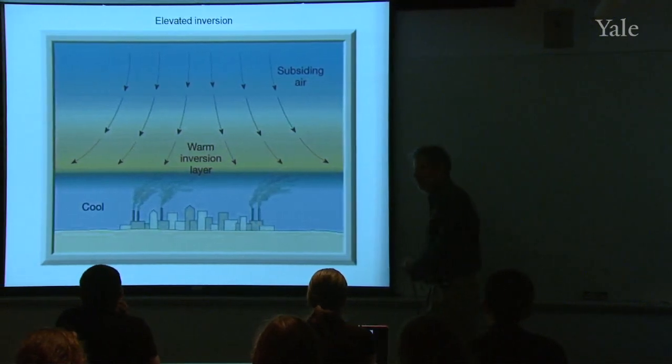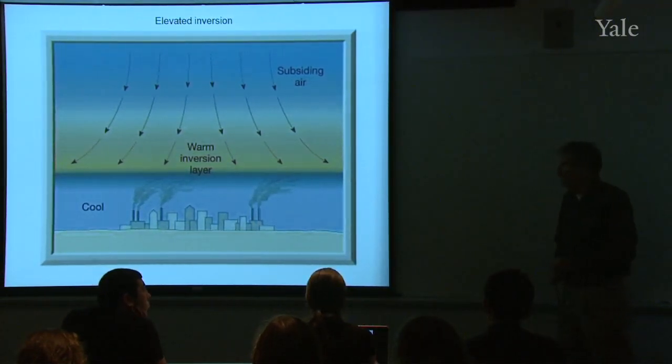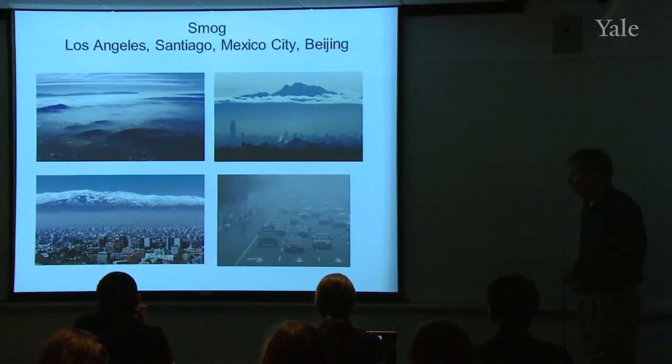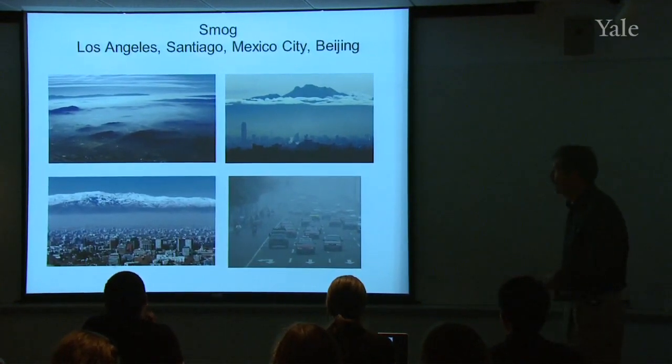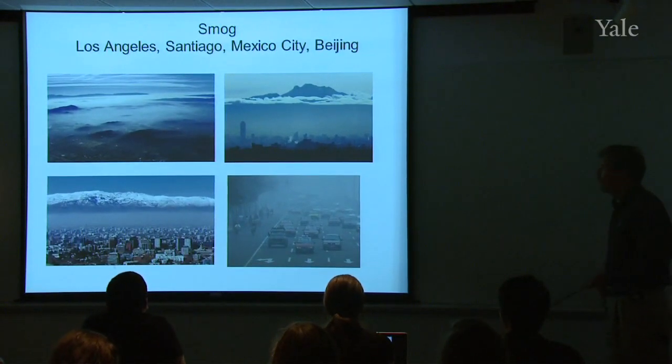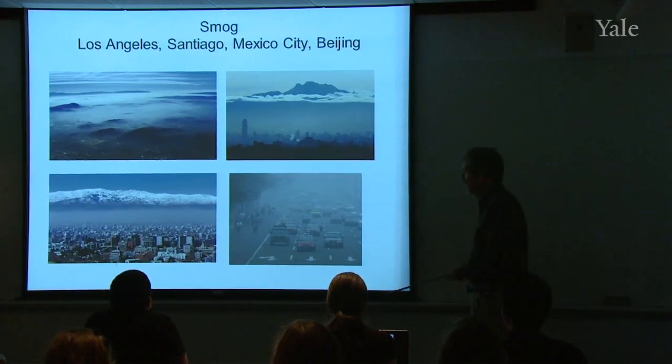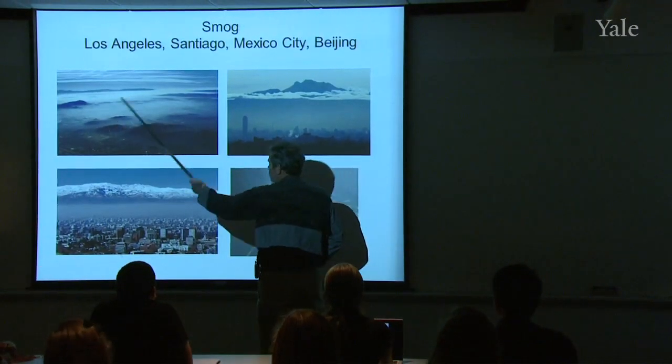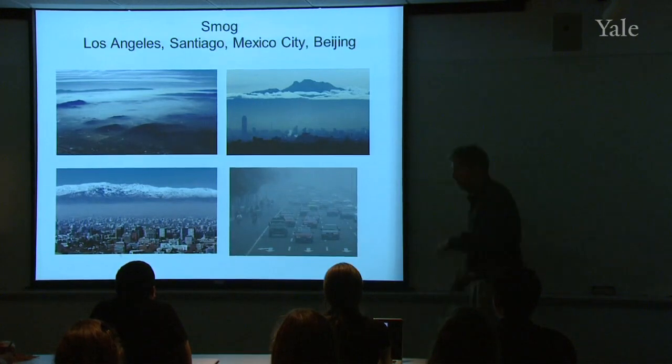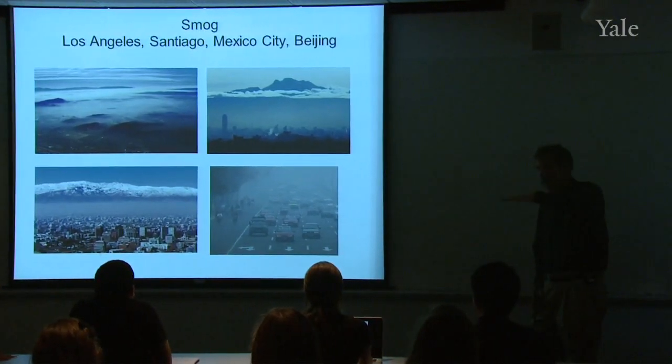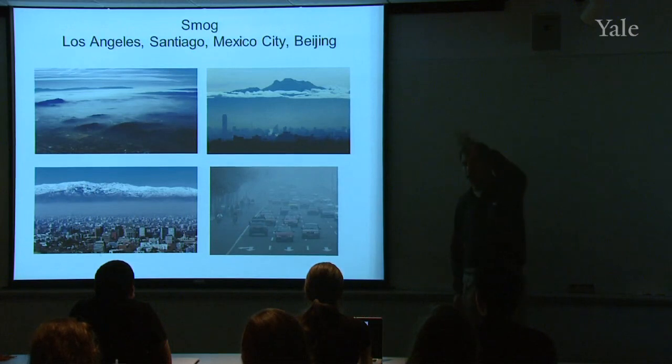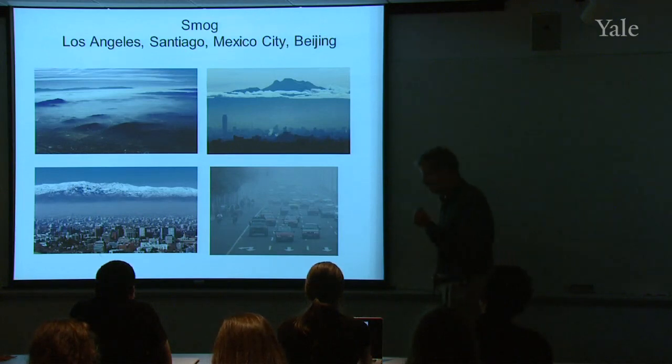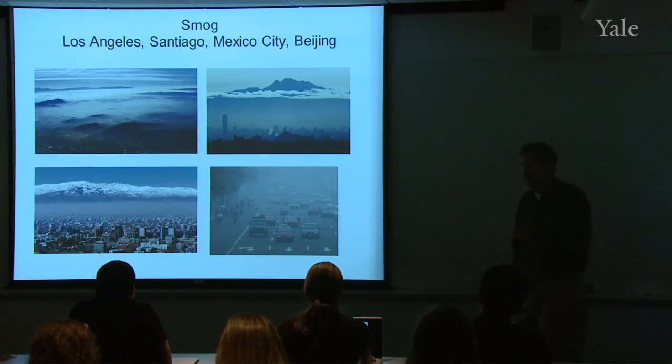Most of the pollution episodes are connected with these elevated inversions. For example, some of the most famous polluted cities in the world, Los Angeles, Santiago, Chile, Mexico City, Beijing, and China, you see pictures of them here. In each case, there is an elevated inversion trapping that pollutant, preventing it from being diluted up into the rest of the free atmosphere. So inversions go together with air pollution episodes.